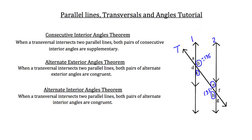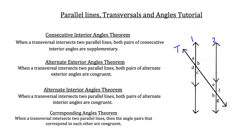The last thing to discuss is the corresponding angles theorem. It states that when a transversal intersects two parallel lines, the angle pairs that correspond to each other are congruent. When they say correspond, they mean the angle pairs that are the same created on each parallel line. For example, angle D and angle H are exactly like each other — one is formed on line 1 with the transversal and the other is formed on line 2 with the transversal.